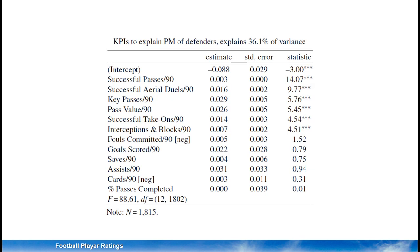For defenders, the most important factors to differentiate between players with a high plus-minus rating and players with a low plus-minus rating are related to passes, aerial duels, take-ons, and interceptions. However, it is a bit hard to evaluate how important each KPI is using just the estimated coefficients, the standard errors, and the significance levels.